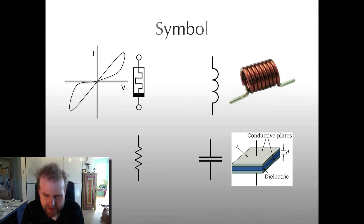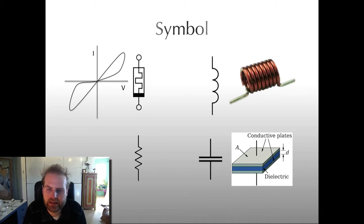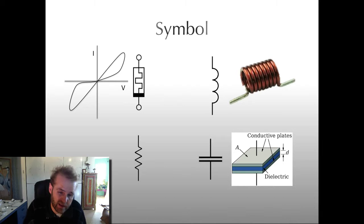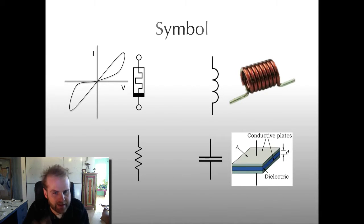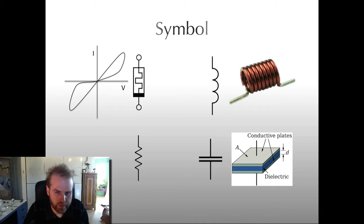Resistor over here — it actually symbolically makes sense, because it's like a kinky wire. Imagine water flowing through a pipe, and then just making that pipe longer and putting a bunch of kinks in it — its resistance will go up. It kind of makes sense that this is a resistor; it's resisting the flow of current. And it's very easy to draw. Easy to draw, symbolically representative.